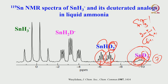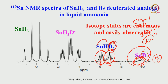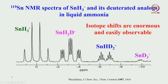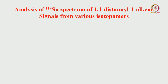This is the Sn-119 spectrum showing both proton coupling and proton-deuterium coupling. The isotopic effect on the chemical shift is enormous — replacing proton by deuterium causes a shift of approximately 3 to 3.2 ppm, which is a huge shift in chemical shift due to the isotopic effect.